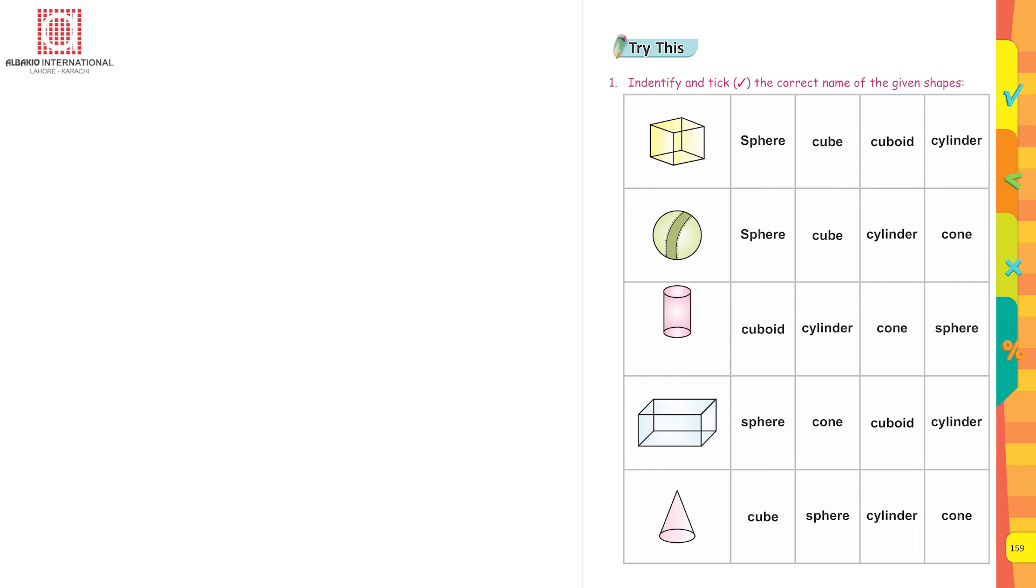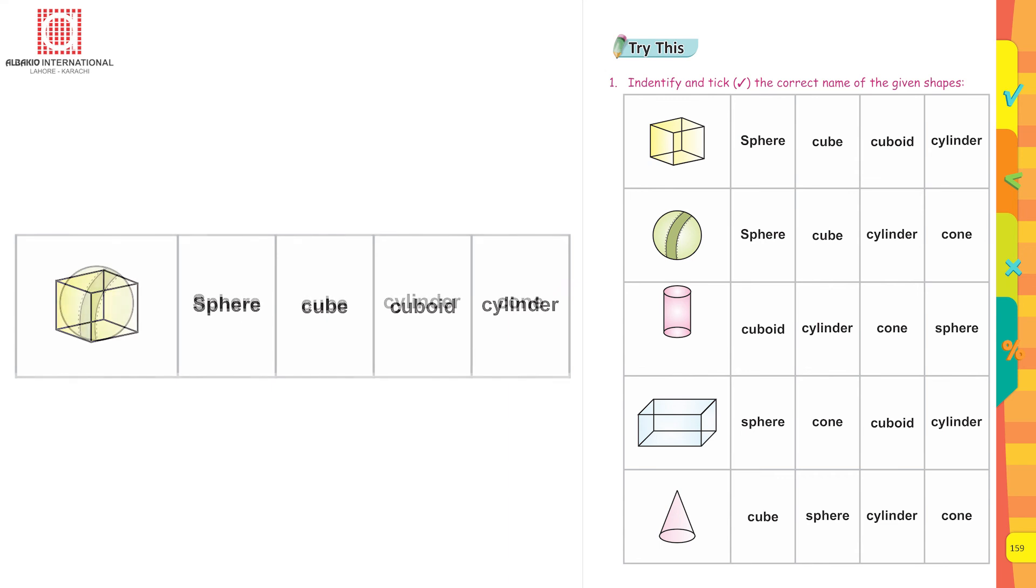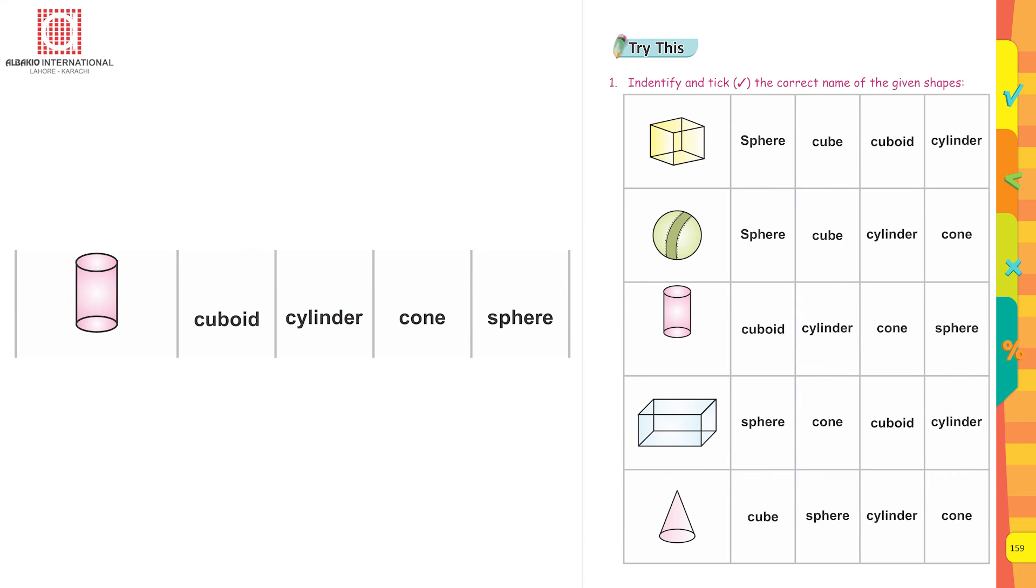Now page 159: identify and tick the correct name of the given shapes. The first one is, yes, all the four sides, all the four edges are the same, so it is a cube. In the second picture it's a cricket ball or a tennis ball, yes, that is a sphere. The third one is a can, it is a cylinder.